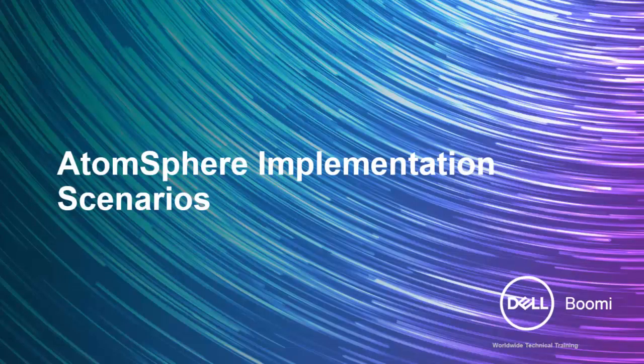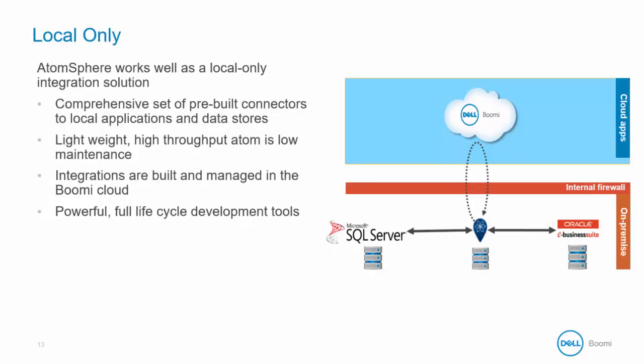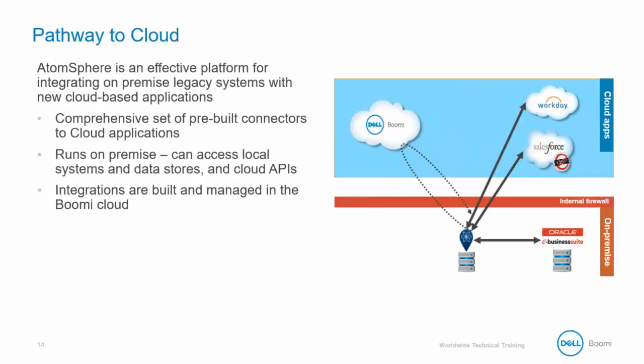Let's take a moment to review some AtomSphere implementation scenarios. The first is a local on-premise to on-premise integration — a lightweight and high-throughput Atom is installed on-premise, and the integration processes are built in the Boomi cloud and deployed to the Atom. The next integration scenario is the Pathway to the Cloud, which is a way of integrating cloud endpoints and applications and local on-premise with a local runtime.